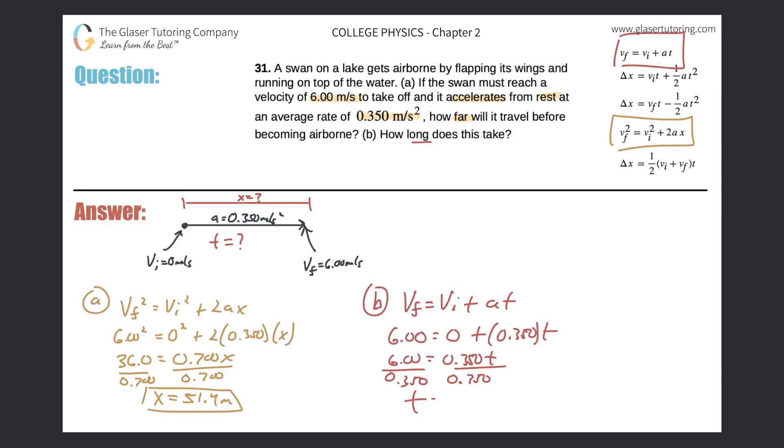And now we get the time is equal to, so six divided by 0.35, it works out to be 17.1, and that'll be in seconds. And that will be the time it takes for the swan to go from zero meters per second to six meters per second, accelerating at a value of 0.350.